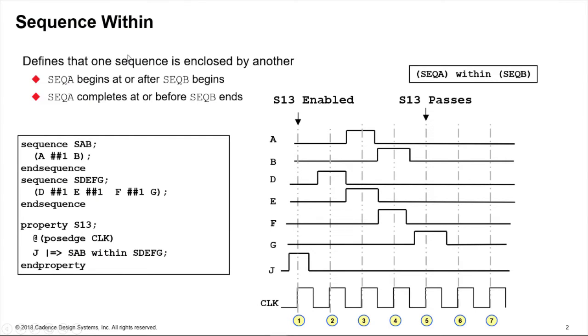As you may guess from its name, what the sequence within construct defines is a construct which is deemed to have passed if one sequence is contained fully within another. For example, sequence A is contained within sequence B.